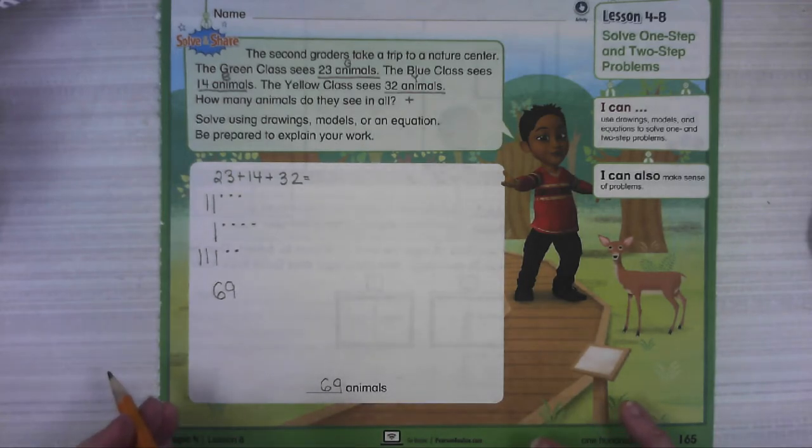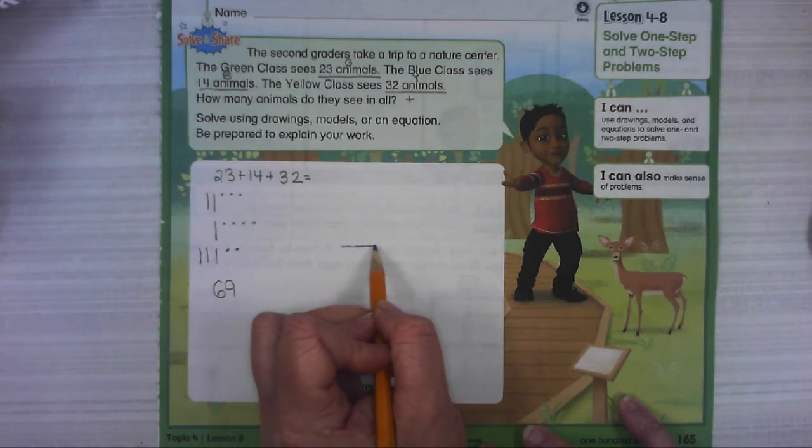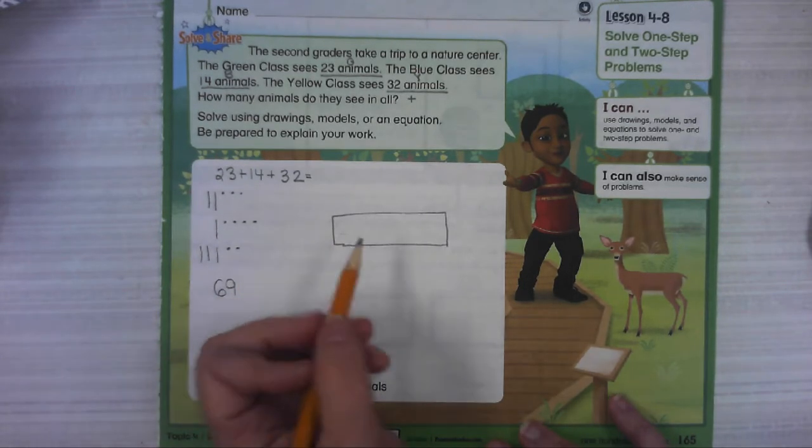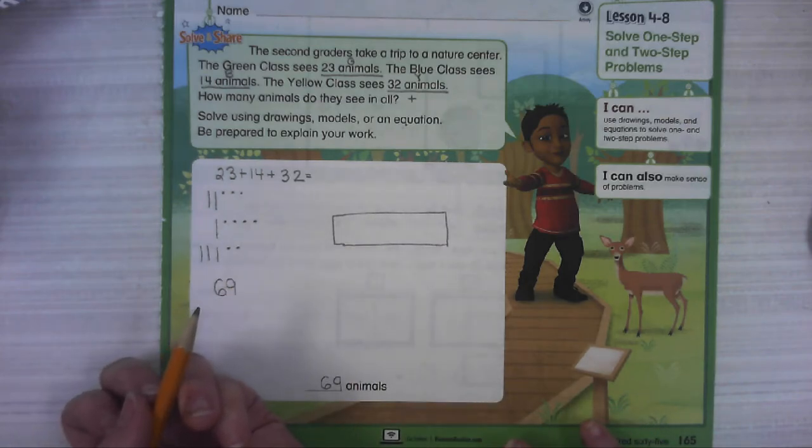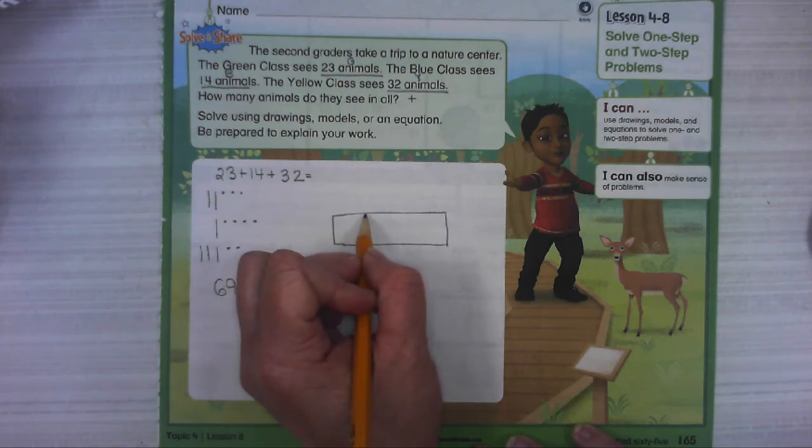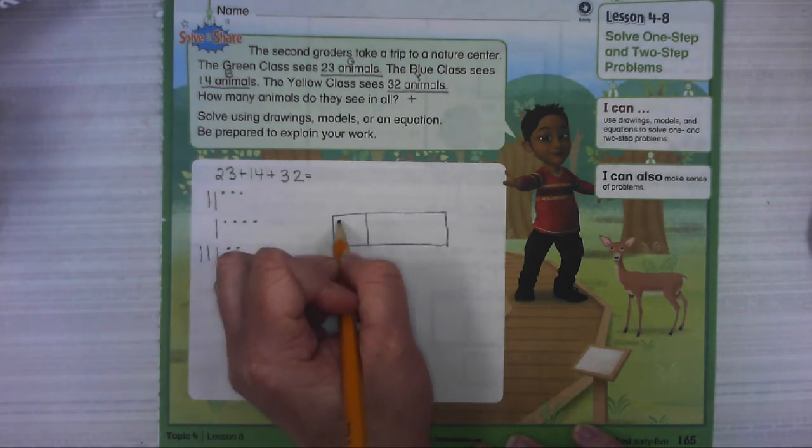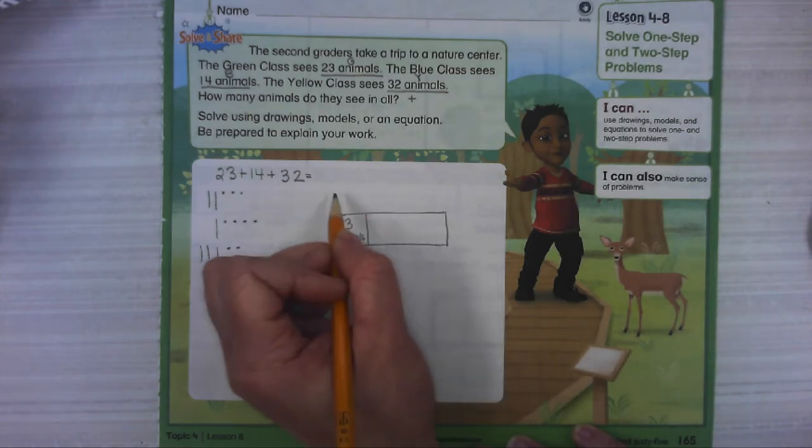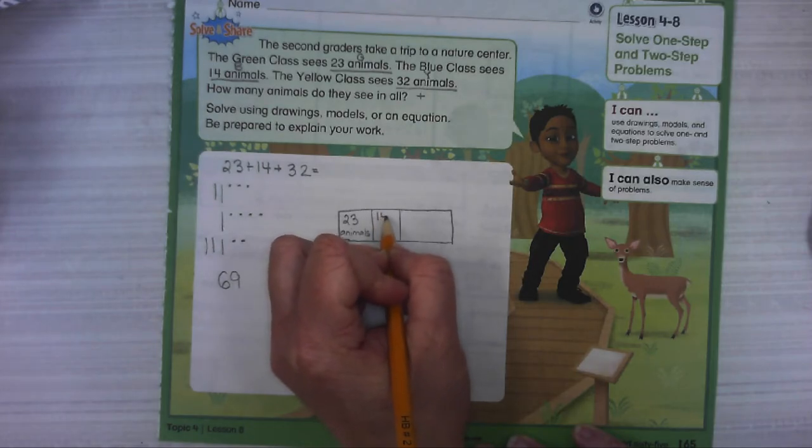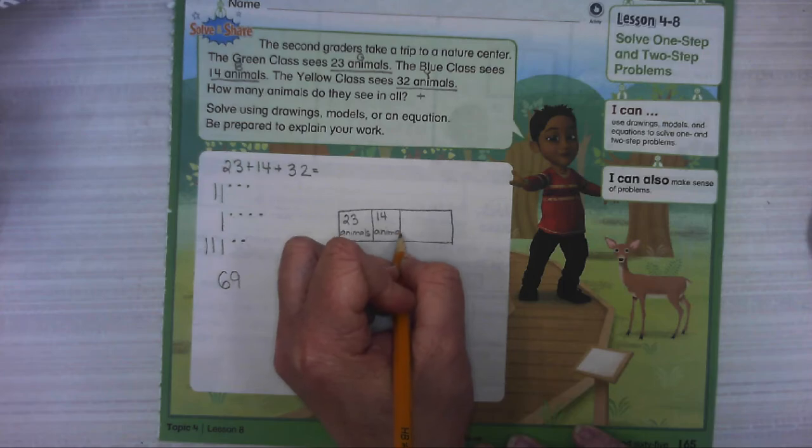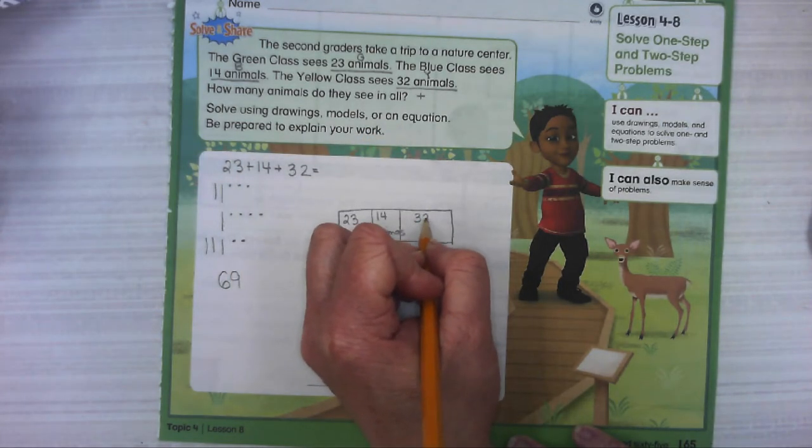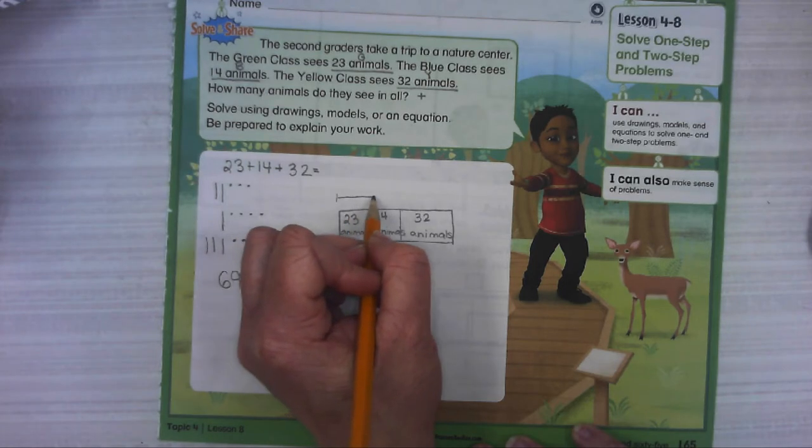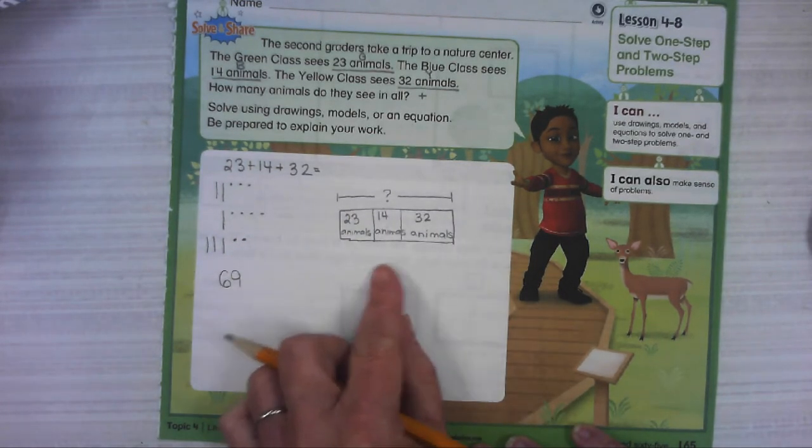Today we're going to be using a kind of model that we haven't used too much. That's called a bar model. So I'm going to show you that another way we could represent this problem is by drawing a bar, which is a rectangle, and then break it up into pieces. How many groups do we have here? We have three, three classes. So we've got the green class, 23 animals. The blue class, 14. And the yellow class is 32, and theirs is the biggest. We're trying to figure out how big this bar is all together. That's another way of showing what we're thinking.